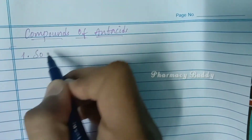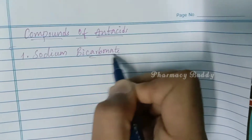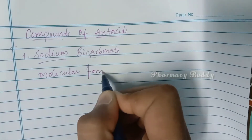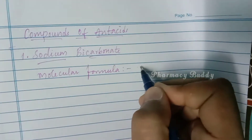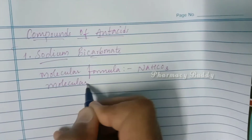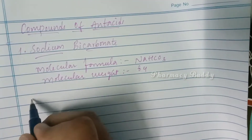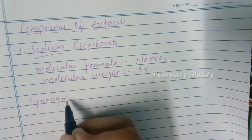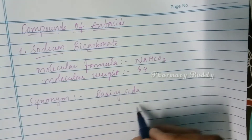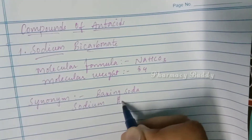The first compound is sodium bicarbonate. The molecular formula of sodium bicarbonate is NaHCO3 and the molecular weight is 84. Some synonyms of sodium bicarbonate: it is also known as baking soda, as we use it for kitchen purposes, and it is also known as sodium hydrogen bicarbonate.